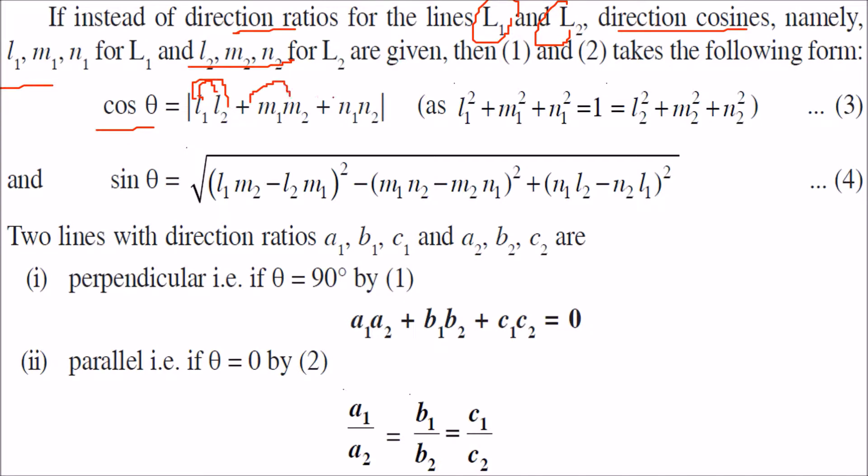We know that the sum of squares of direction cosines always equals 1. Similarly, placing it into under root 1 minus cos square theta, sin theta will be this one.